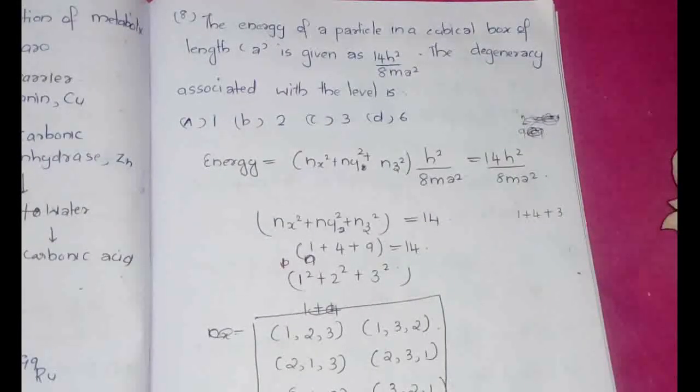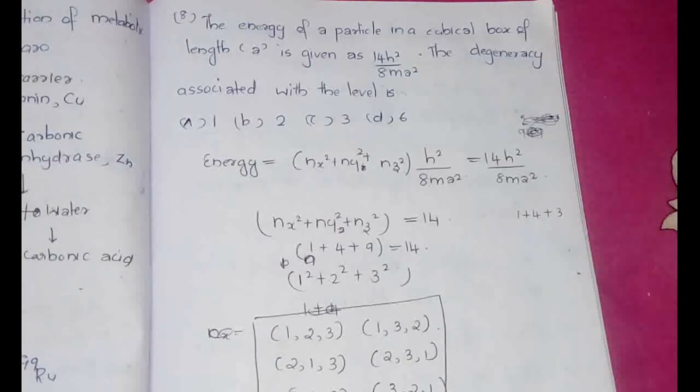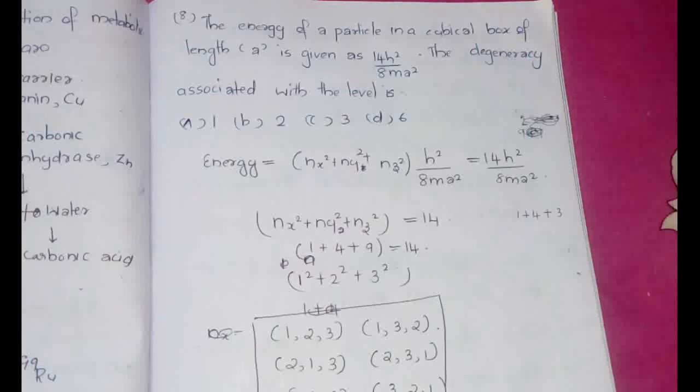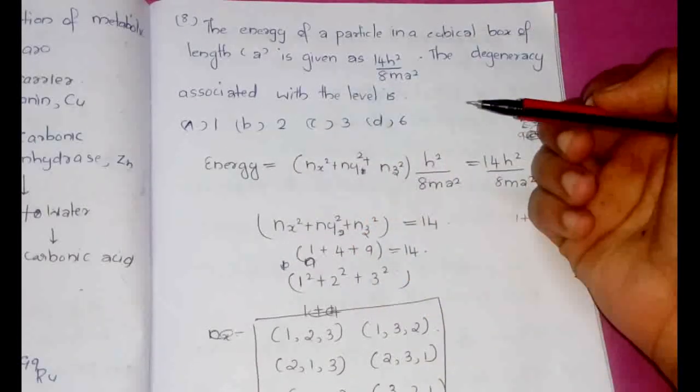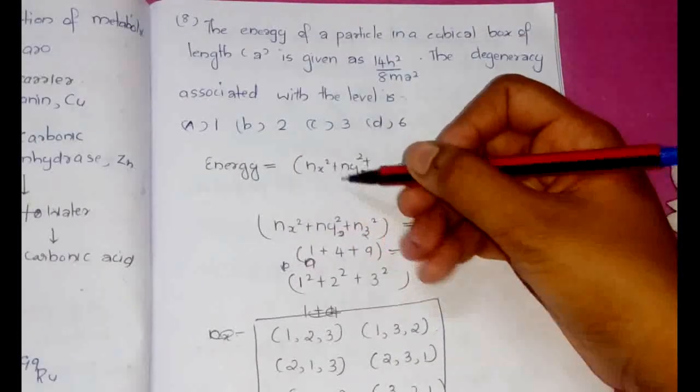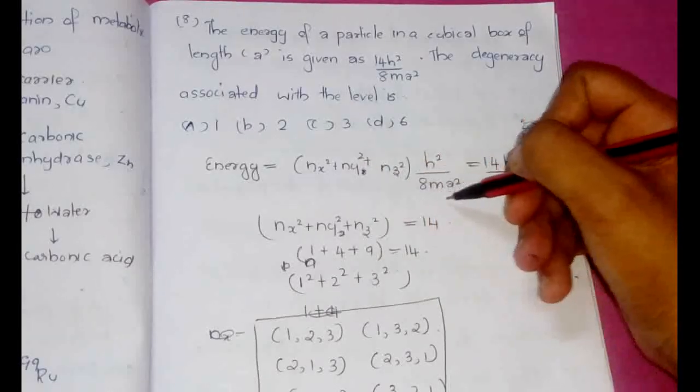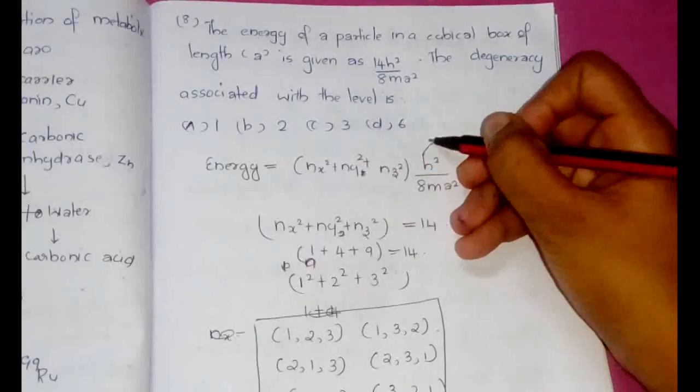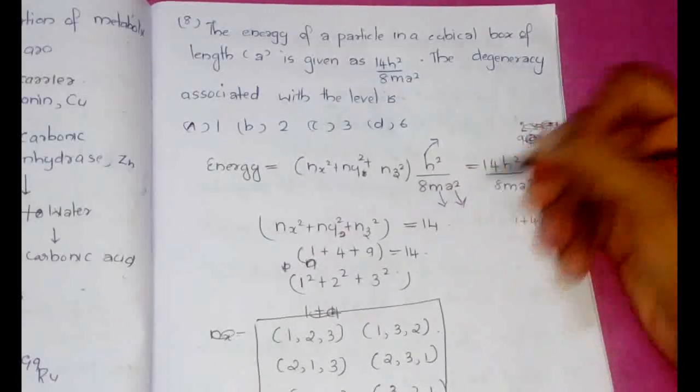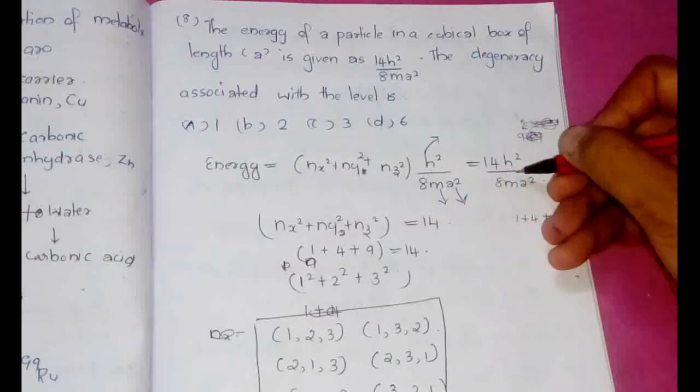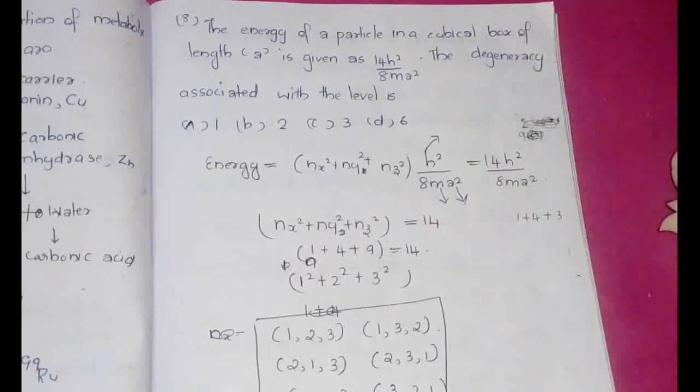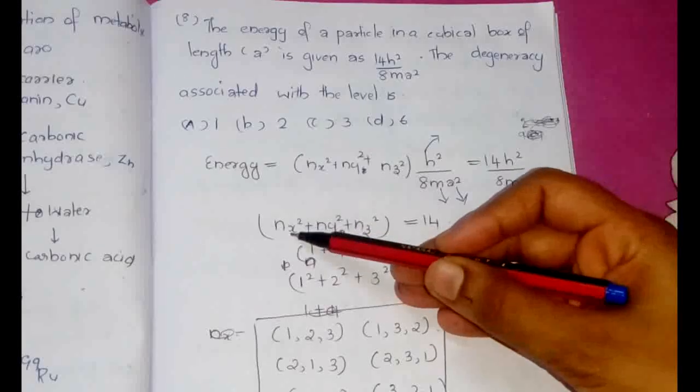So the next question is from physical chemistry. The question is: the energy of a particle in a cubical box of length a is given as 14 h square by 8ma square. The degeneracy associated with this level is. So first of all we need to know that the energy of a cubical box is given by nx square plus ny square plus nz square, h square by 8ma square, where h is the Planck's constant, m is the mass, and a is the length of the box. And this particular value is given as 14 h square by 8ma square in this particular question. And now we can equate nx square plus ny square plus nz square equal to 14.